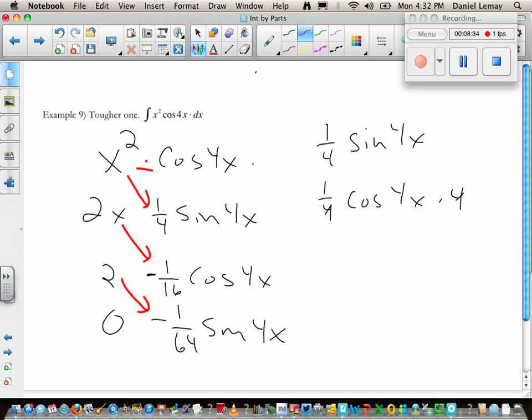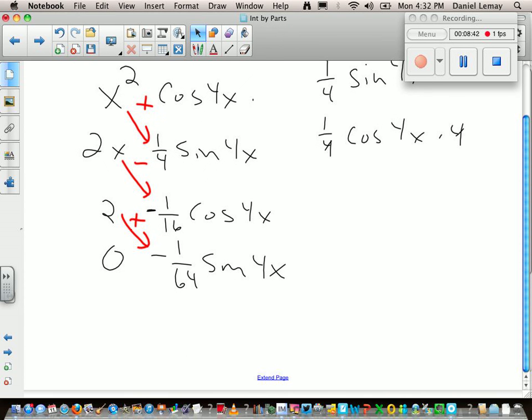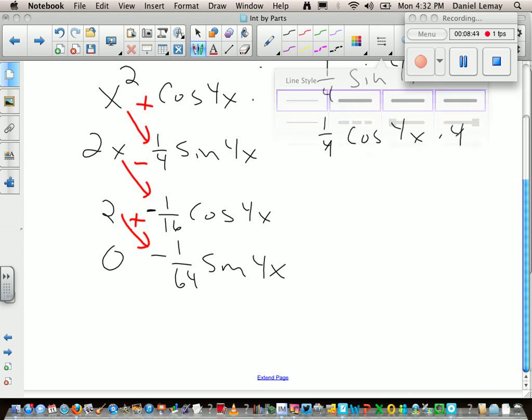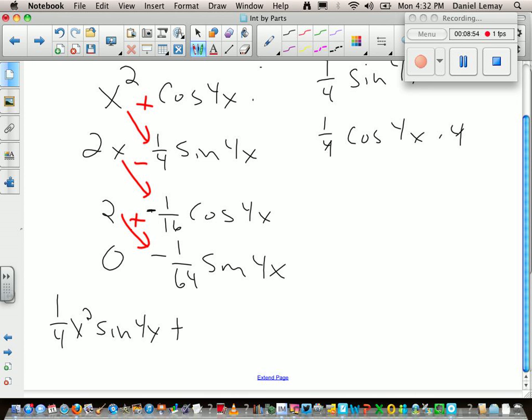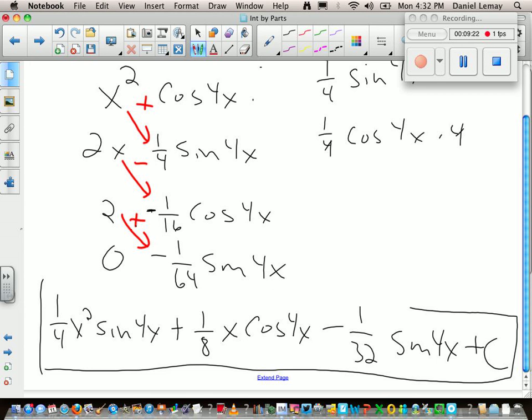So I've got the lines matched up, draw those kitty corner diagonal lines, go plus minus plus. And then you just write those products. So I'm going to get 1 4th x squared sine 4x, and then I've got a minus a minus so that's going to be plus, and 2 times 1 16th is 1 8th x cosine 4x. And then a plus times a negative is a negative, so minus, and 2 times 1 64th is 1 over 32 sine 4x plus c. And that is one long honkin integral.